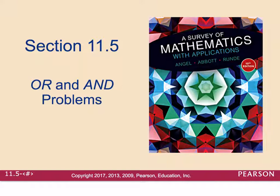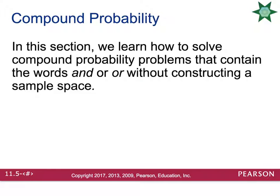Section 11.5 is OR and AND problems with probability. In this section we're going to learn how to solve compound probability problems. They'll contain the words AND and OR, and we're going to do this without constructing a sample space. Sometimes creating the sample space can get really tedious and lengthy, and there are faster ways to do it if you have the proper formulas.